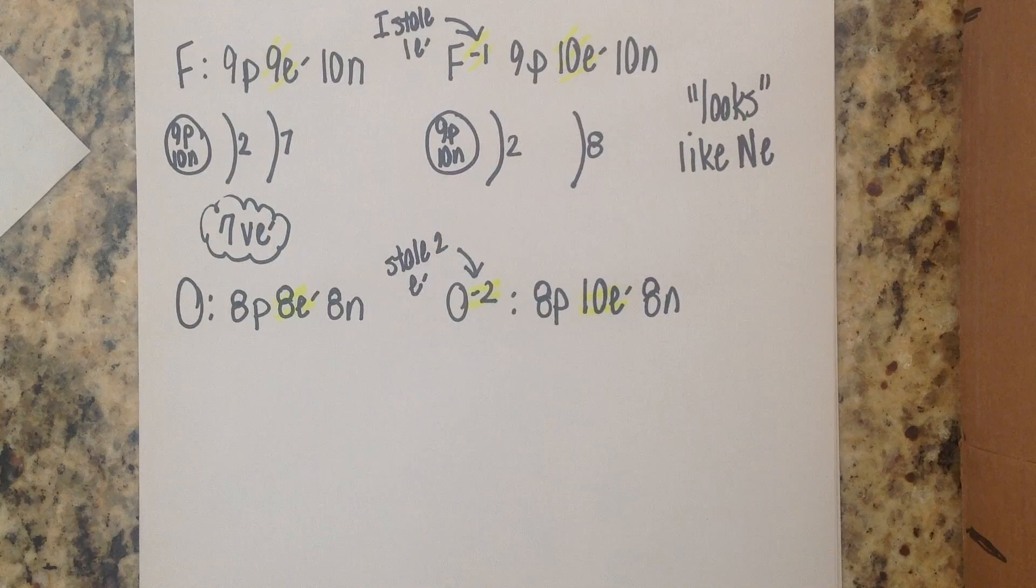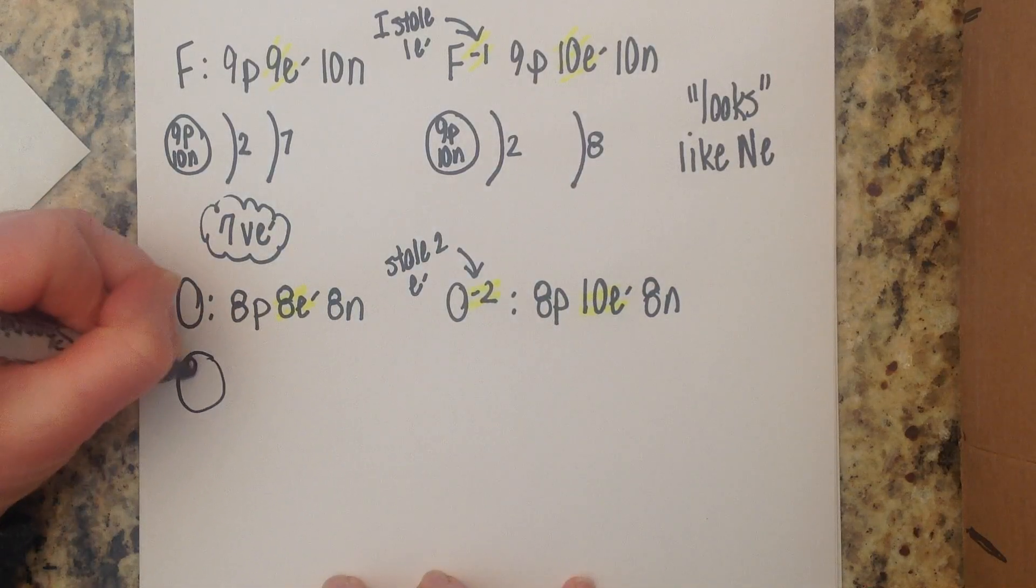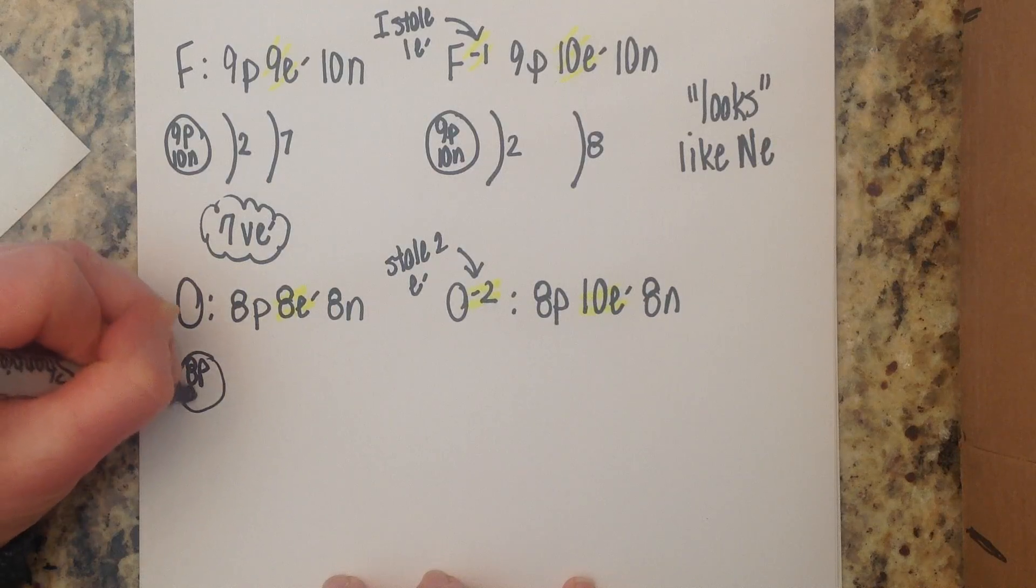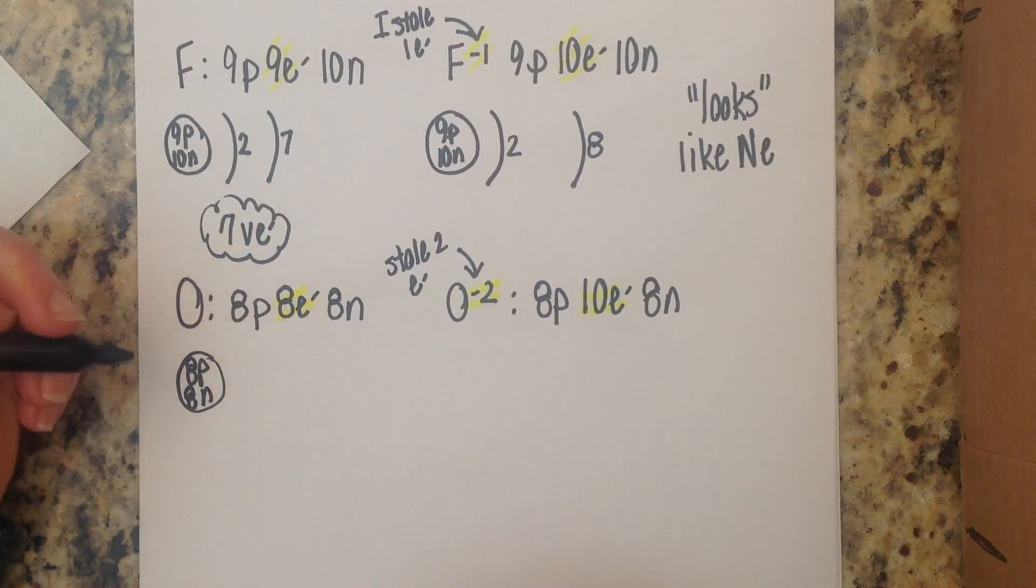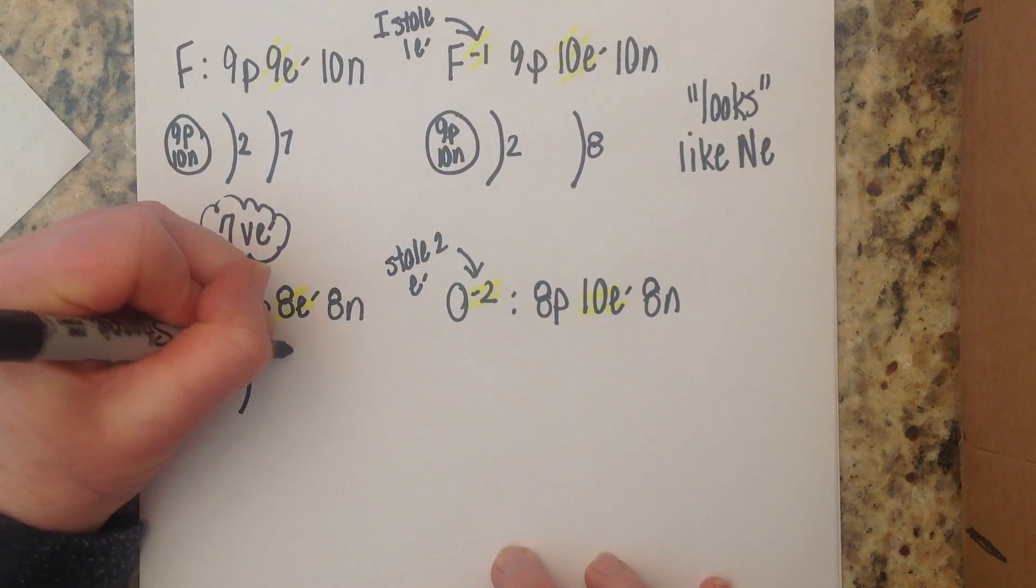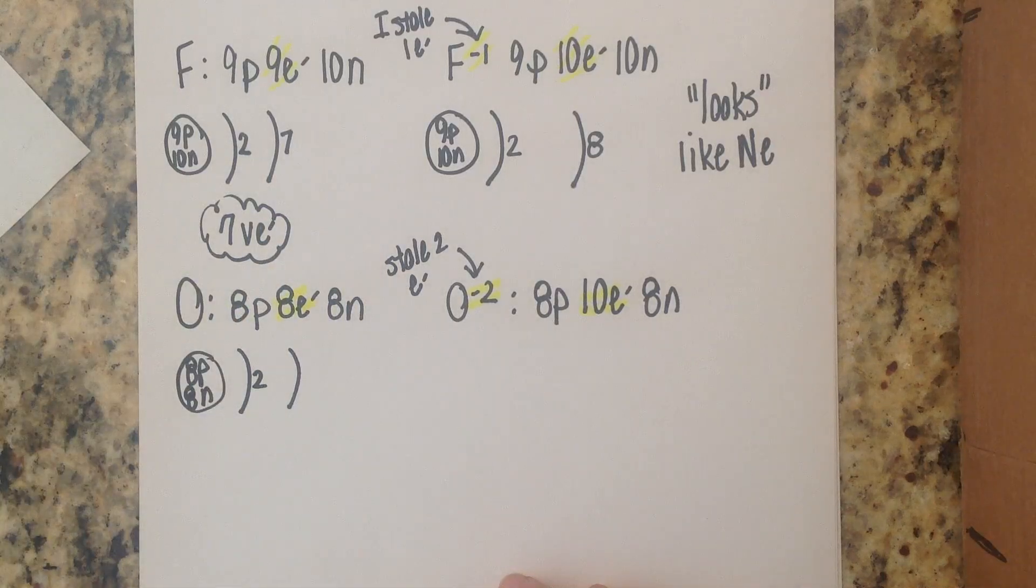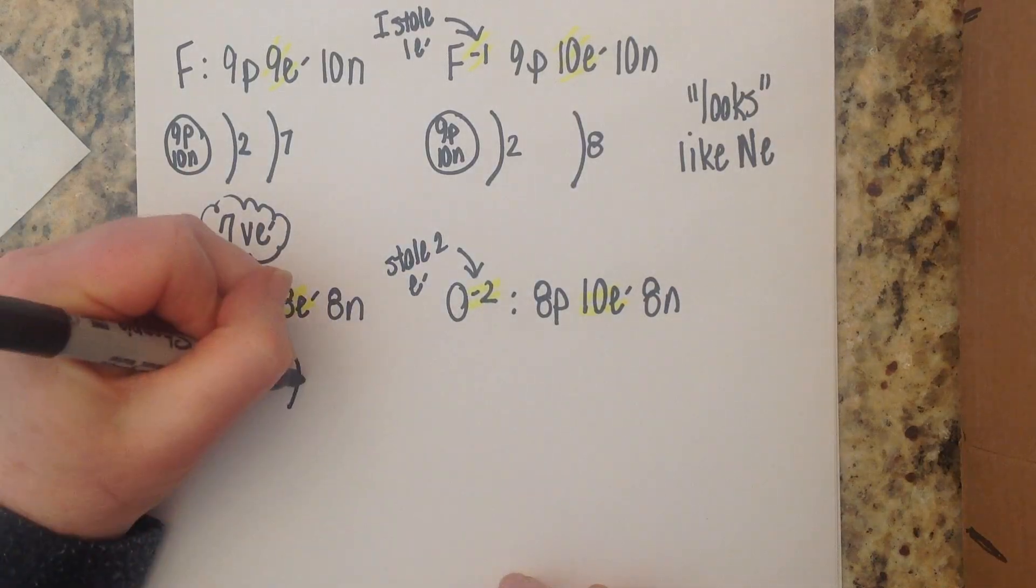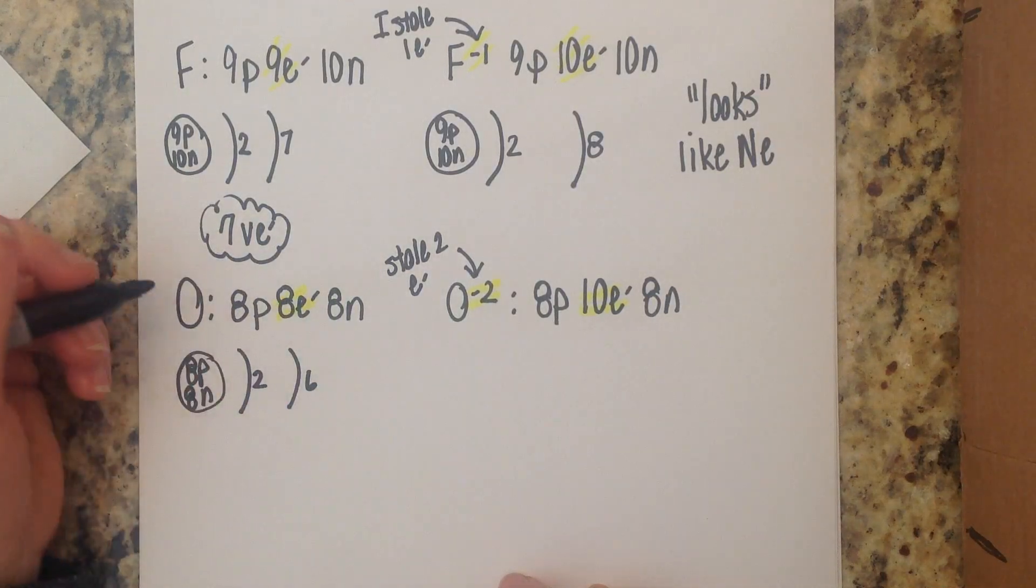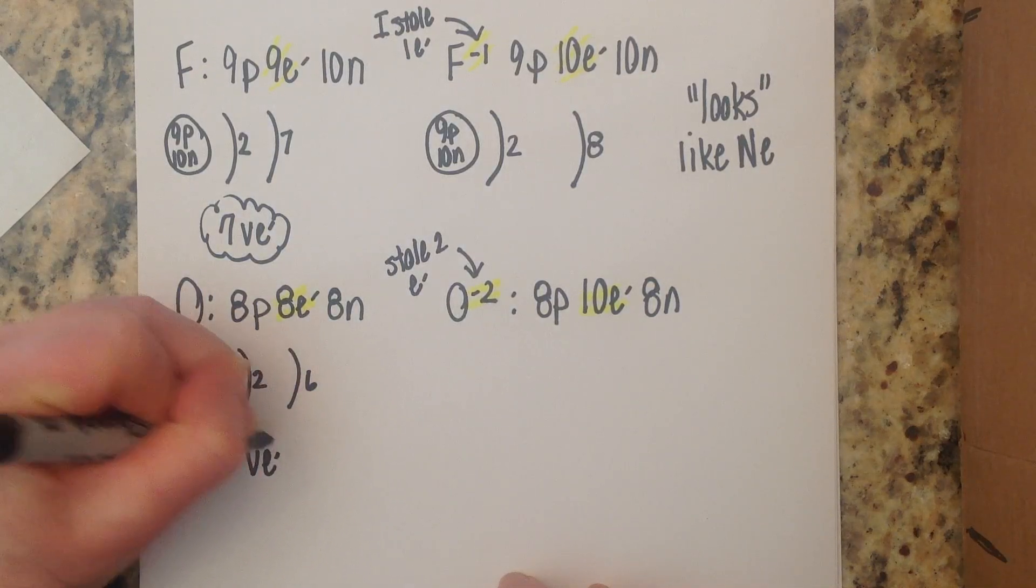So we're going to draw this atom and see what that looks like so the oxygen atom has eight protons and eight neutrons in the nucleus. Since oxygen is on level two we've got two levels of electrons there are two electrons on the first level and we have six more on the second level so the oxygen atom actually has six valence electrons.